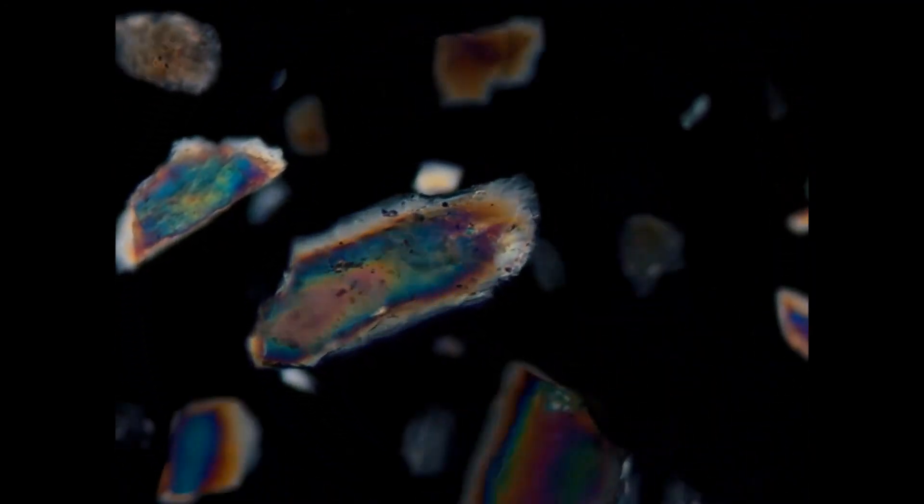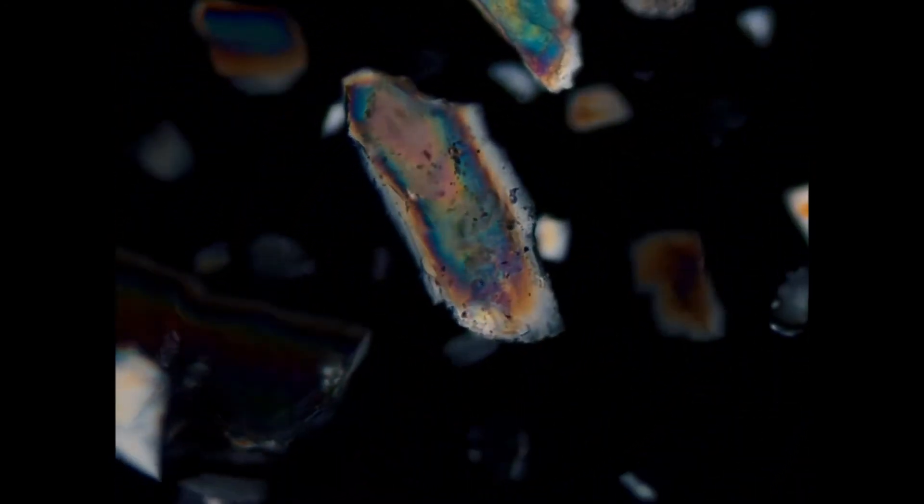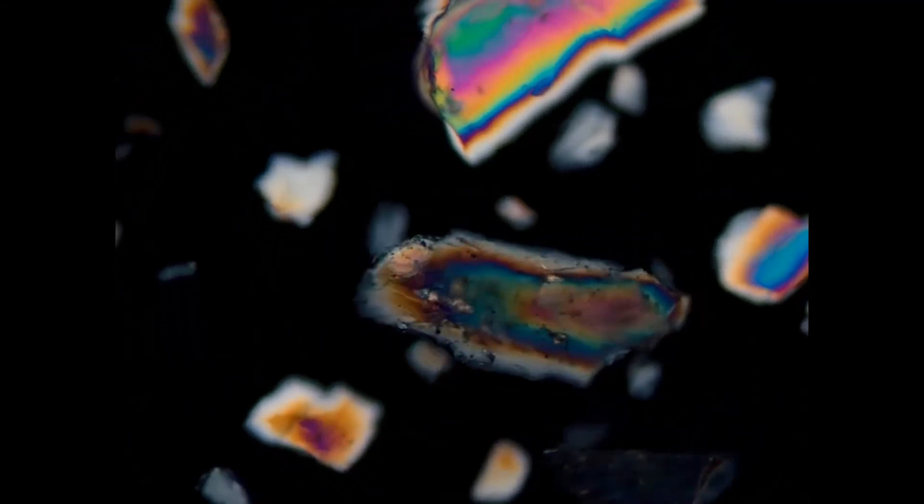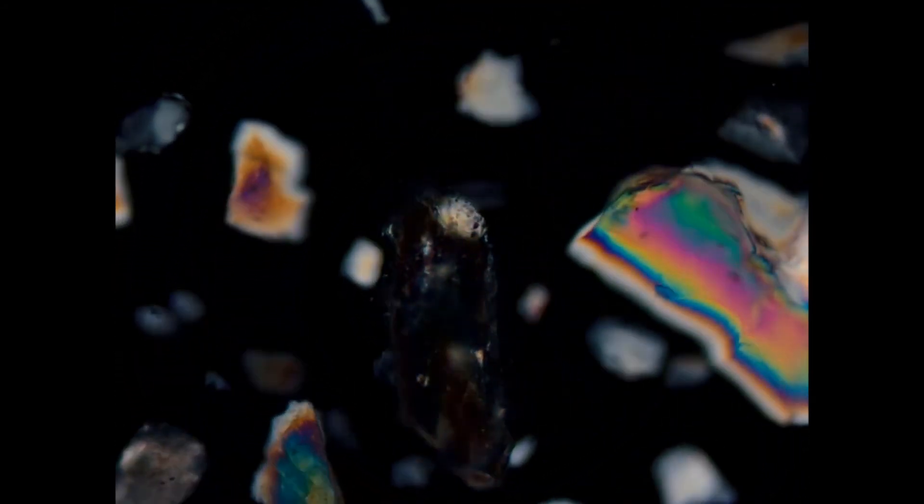If we rotate the grain under cross-polarized light, we can see that it is always extinct when it is oriented in a north-south direction, which means that it has parallel extinction.